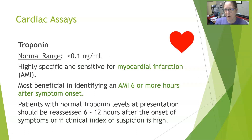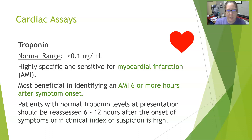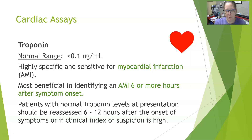Myoglobin also rises pretty quickly and rises sooner than a troponin. The last and most commonly used cardiac assay is a troponin. The normal range for troponin is less than 0.1 nanograms per milliliter. It is highly specific and highly sensitive for a myocardial infarction, meaning any elevation in these cardiac troponins would indicate that it's being released from the heart muscle. It is most beneficial in identifying an acute MI six or more hours after symptom onset.